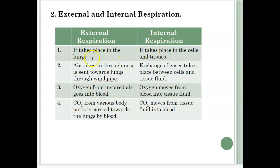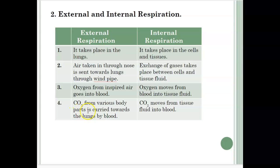External respiration and internal respiration. External respiration takes place in the lungs — air is taken in through the nose and sent towards the lungs through the windpipe. Oxygen from inspired air goes into the blood, and carbon dioxide from various body parts is carried towards the lungs by blood. Internal respiration takes place in the cells and tissues — exchange of gases takes place between cells and tissue fluid. Oxygen moves from blood into tissue fluid; carbon dioxide moves from tissue fluid into blood.